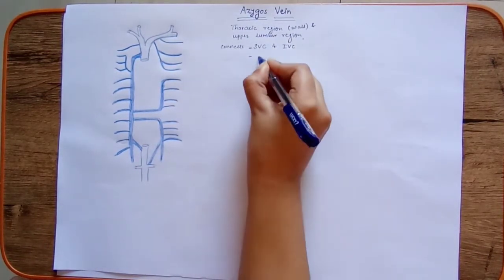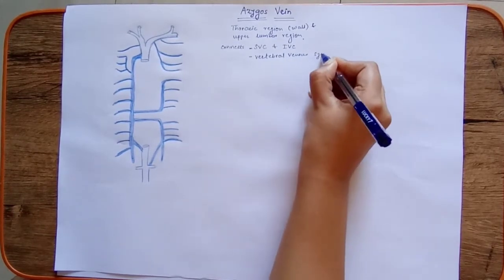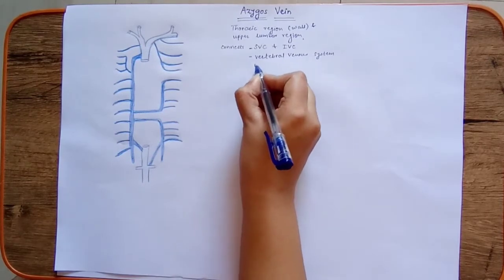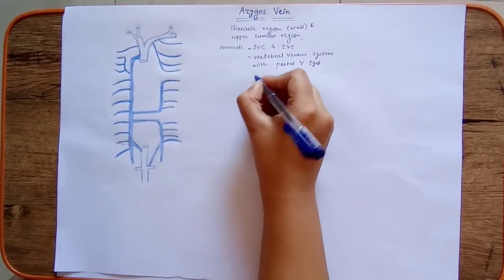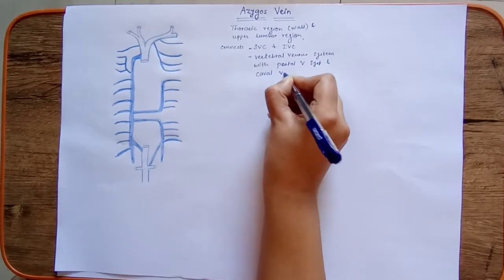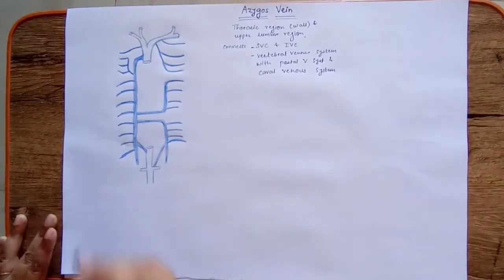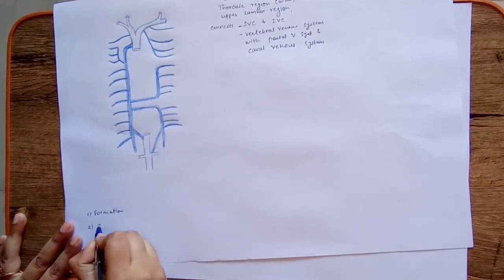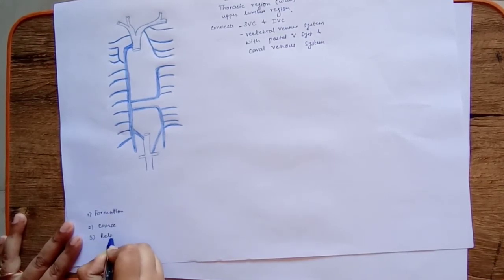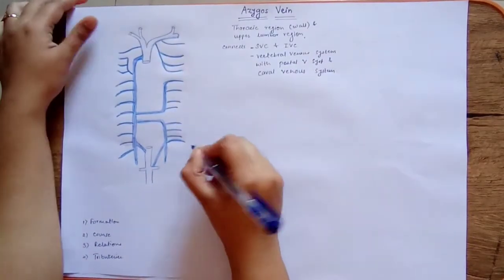The azygous vein also connects the vertebral venous system with the portal venous system and the caval venous system. We are going to discuss the azygous vein under the following heads: first, formation of the azygous vein; then course; then relations; and finally tributaries.